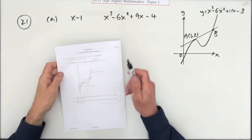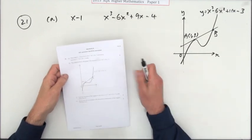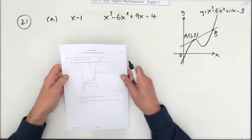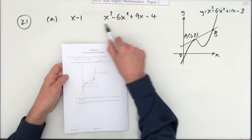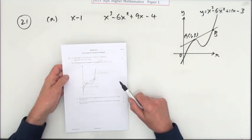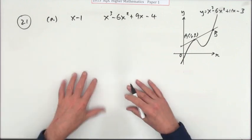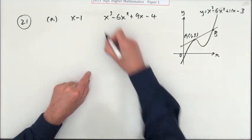Number 21, the first one from section B of paper 1 of the 2015 SQA Higher. Show that x-1 is a factor of this expression and hence factorize it fully. Well, you're going to use your synthetic division here.